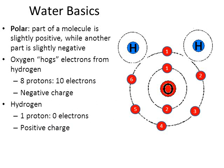Now let's focus our attention for a moment on hydrogen. Hydrogen has one proton, so that means it has one electron. But my notes say that it has zero electrons — that's because after oxygen kind of grabs the electron, hydrogen really won't have any.